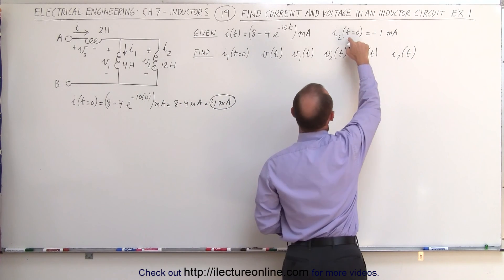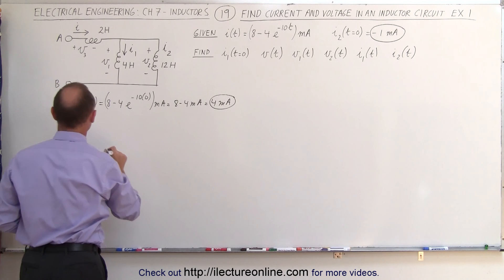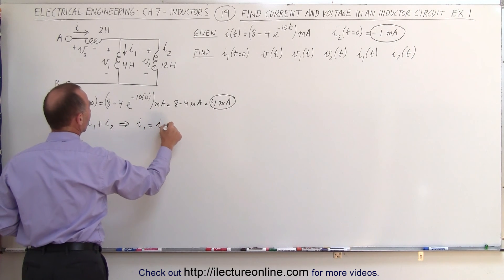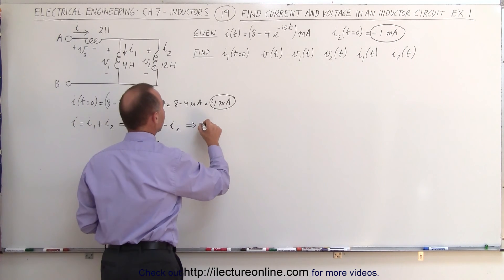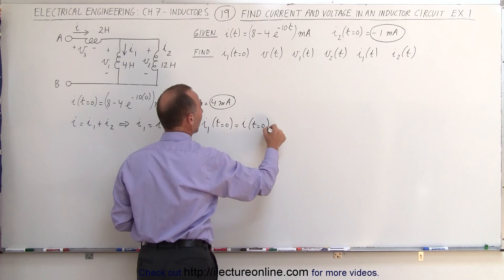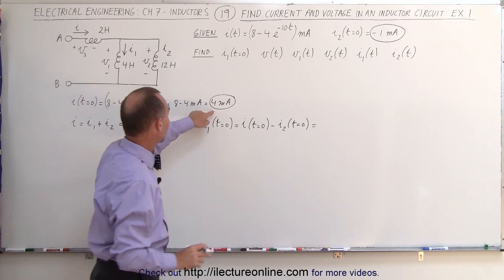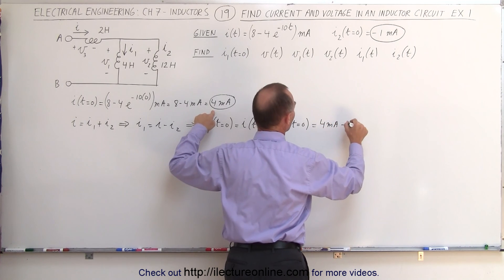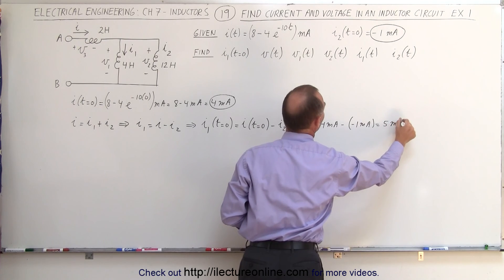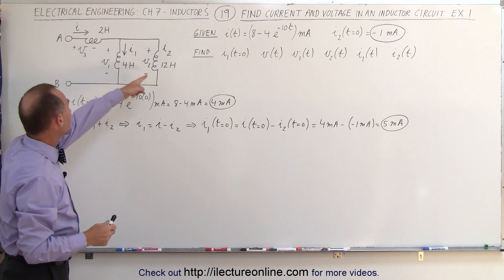We're given that the current through the second branch is negative 1 milliamp, and from that we can find the current in the first branch. We know that I equals I1 plus I2, which means I1 equals the total current minus I2. So I1 at t equals 0 equals 4 milliamps minus negative 1 milliamp, giving an initial current of 5 milliamps through the first of the two parallel branches. Now we know the initial current in all three inductors.